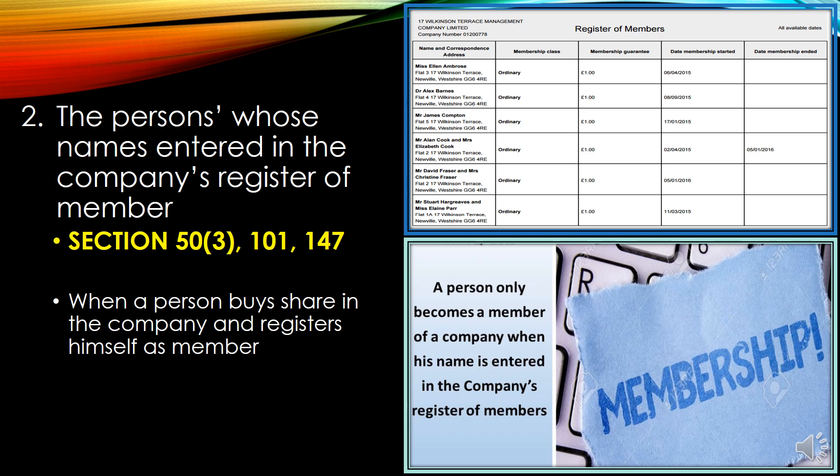In this case, you can see in column two the membership class is ordinary shares, or membership by guarantee. This is a sample of a register of members. Those persons whose names are mentioned or registered in the register of members are the members of the company.